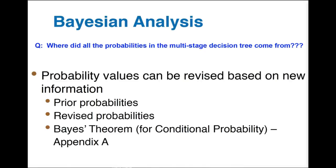We'll look at prior probabilities, revise them using Bayes' theorem, which tells us about what's called conditional probability. If you're looking at the textbook for this, it will be in Appendix A. I'm going to do a short review to get you up to speed on what you need to look at.